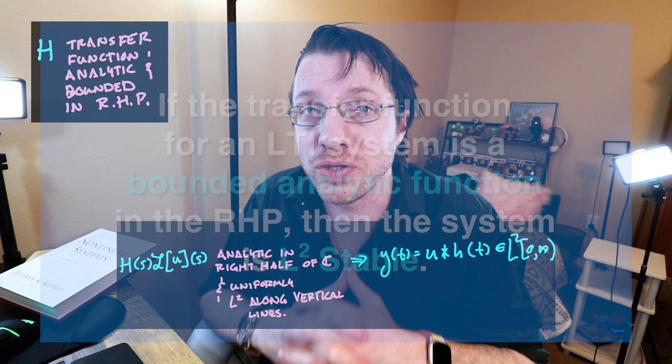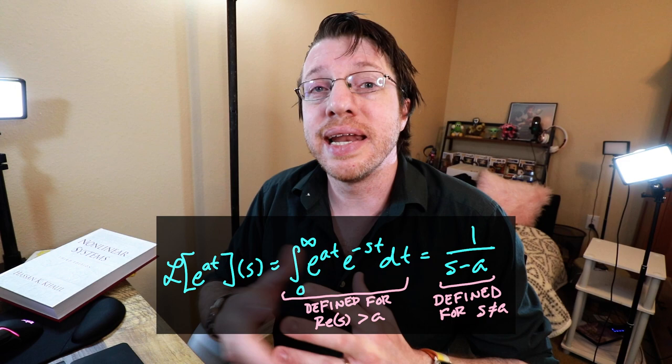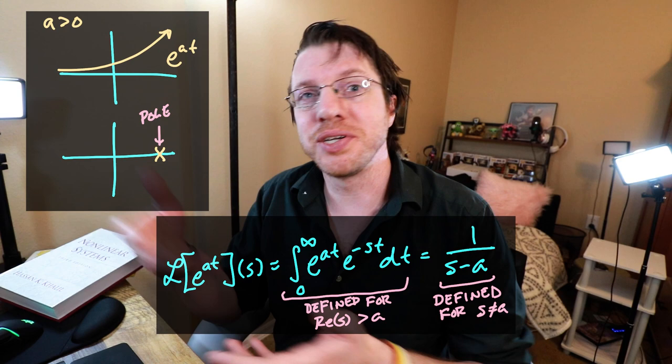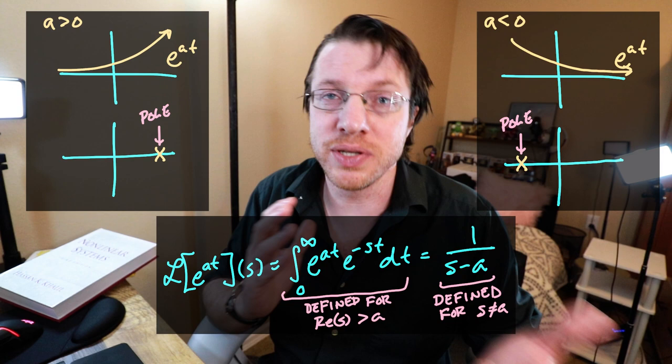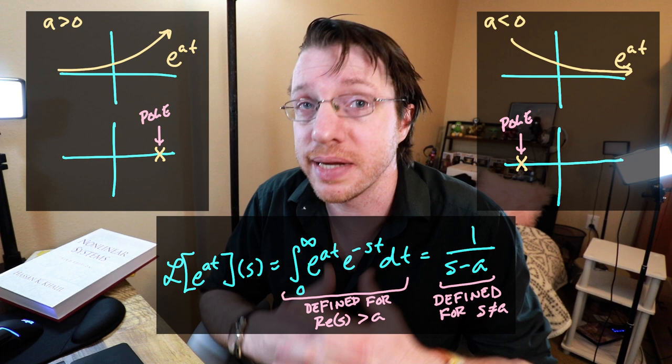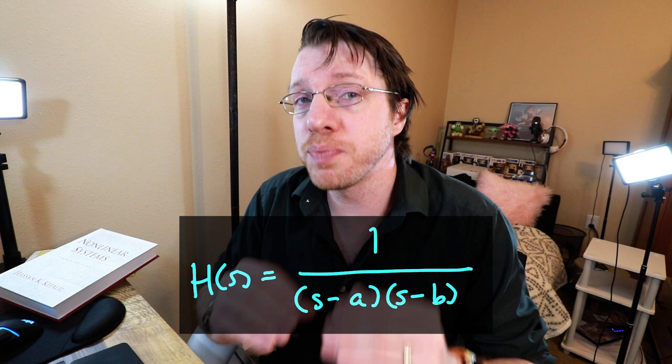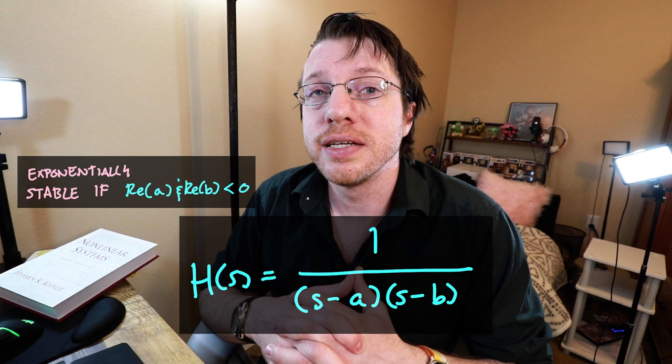That's two stability notions down. What we'd also like is conditions for exponential stability. This is conceptually straightforward: all we need is that all the poles of our transfer function be in the left half of the complex plane. Consider the term 1/(s − a), which corresponds to e^(at). If a is positive, we have exponentially growing behavior; if a is negative, exponentially decaying. That puts the pole on either the right or left half of the complex plane. So for a rational transfer function, we look at the denominator, examine its poles, and determine whether the system is exponentially stable depending on where they reside.